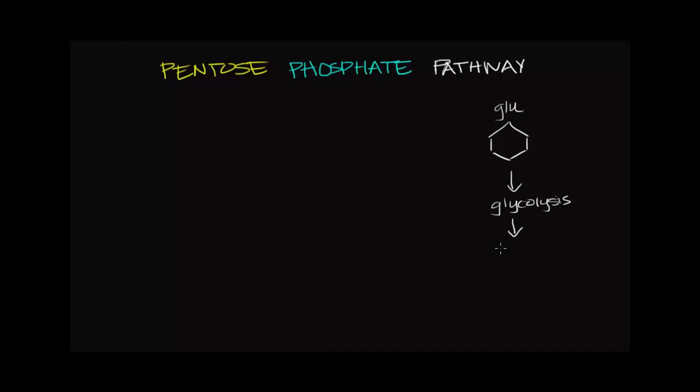And then it goes through the Krebs cycle in the mitochondria, also known as the TCA cycle. And then finally, it goes to the electron transport chain in the mitochondria to produce ATP.